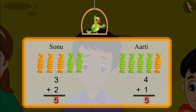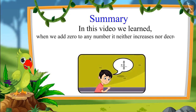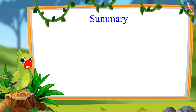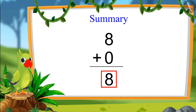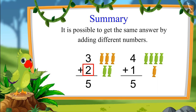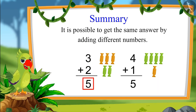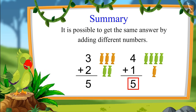So children, it is possible to get the same answer by adding different numbers. In this video we learned that when we add 0 to any number, it neither increases nor decreases. For example, when we added 0 to 8, the total remained 8. We also saw that it is possible to get the same answer by adding different numbers. For example, when we add 3 and 2, we get 5. And when we add 4 and 1, we still get 5. This means that we can get the same answer by adding different numbers.